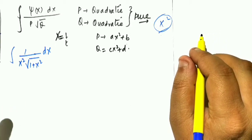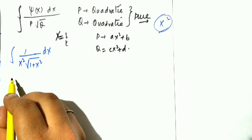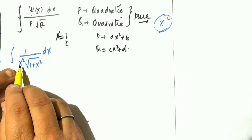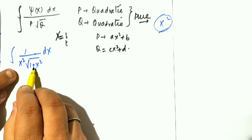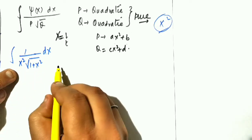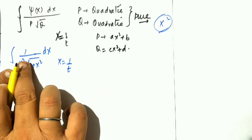I will just substitute x equal to 1 by t. So look at what kind of integral will this be: 1 by x square and 1 plus x square. You can see that p and q are pure quadratic expressions. Therefore I will assume that x equal to 1 by t.